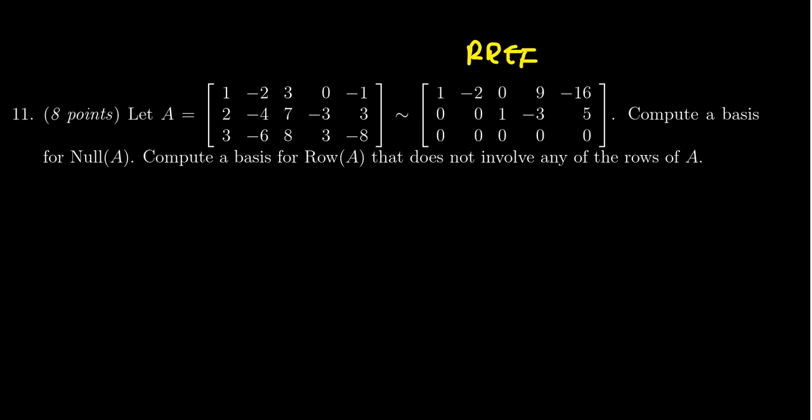Both of these we can get from the echelon form. So since we have this row reduced echelon form we notice there is a pivot position in the first and third column. That tells us that the variables 2, 4, and 5 are the free variables to the associated homogeneous system of equations.